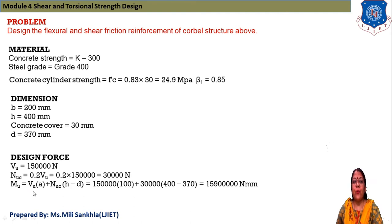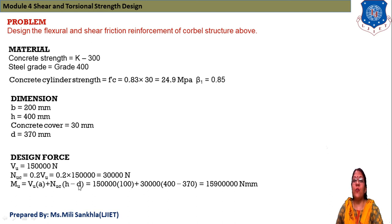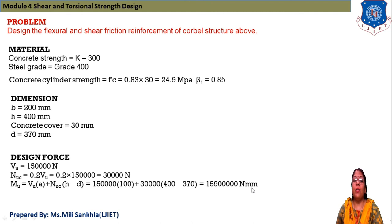The ultimate moment MU = VU × a + NUC × (H − D). VU = 150,000 N, a = 100 mm, NUC = 30,000 N, H = 400 mm, D = 370 mm. Solving, the ultimate moment MU = 1.59 × 10^7 N·mm.